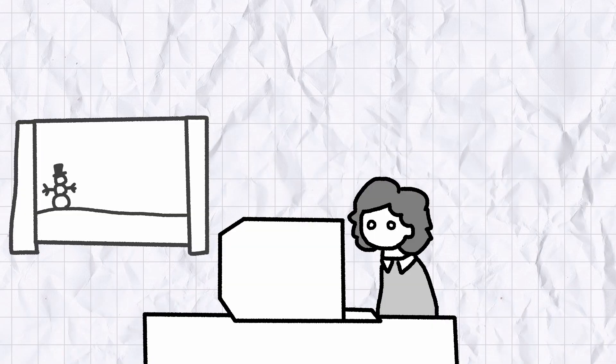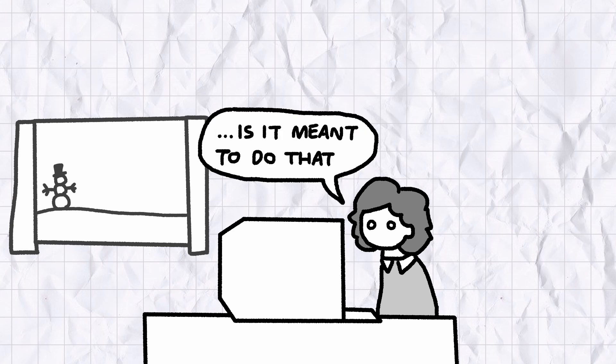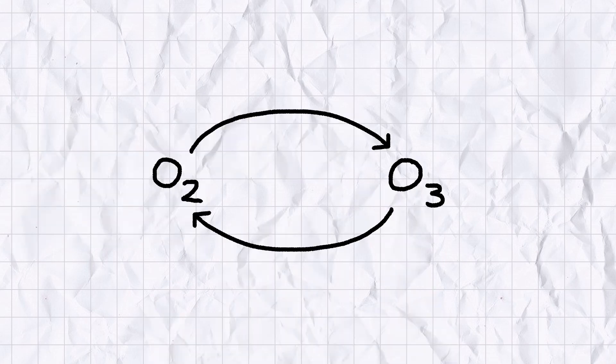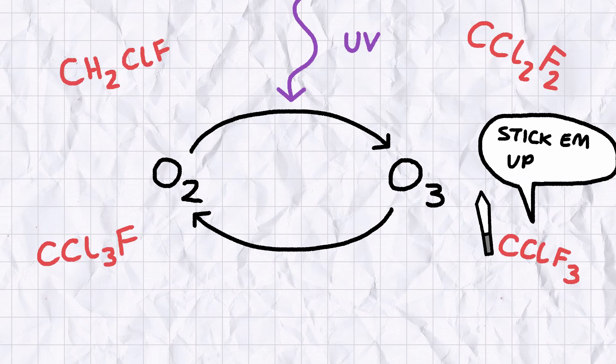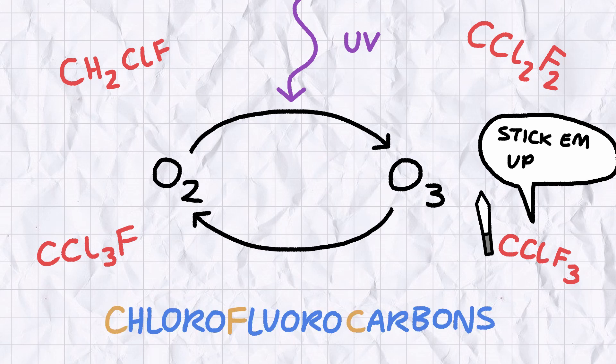The highest concentrations of ozone in air are found in a section of the stratosphere known, fittingly enough, as the ozone layer. But in 1985, a team of climate scientists at an Antarctic research station made the discovery that shook the world to its very foundations. Ozone is constantly being produced and destroyed in the stratosphere thanks to ultraviolet radiation emitted by the sun.